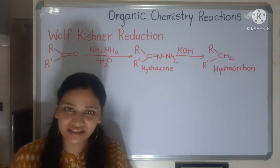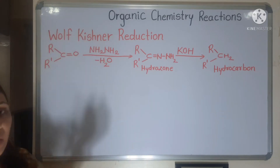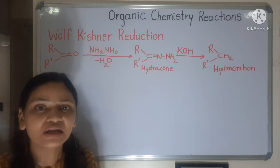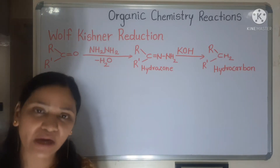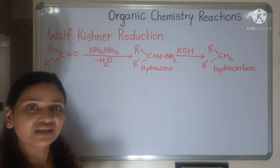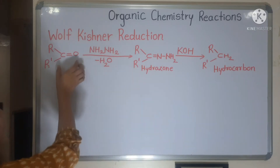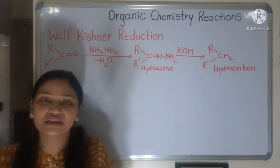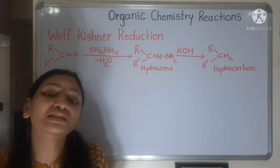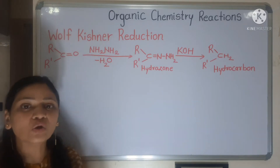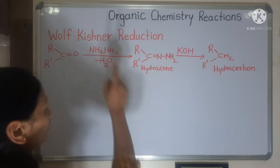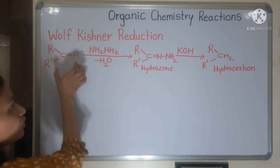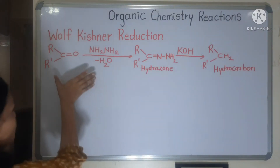Generally, when we talk about reduction, the carbonyl group gets converted into alcohols — secondary ketone gets converted into secondary alcohol, and aldehyde gets converted into primary alcohol. But there are specific reagents which convert the carbonyl group into hydrocarbon. We already saw Clemmensen reduction reaction — that also converts carbonyl to hydrocarbon. Similarly in Wolf-Kishner reduction, your carbonyl group gets converted into hydrocarbon.